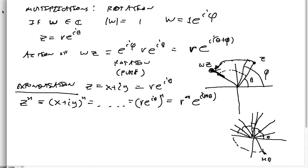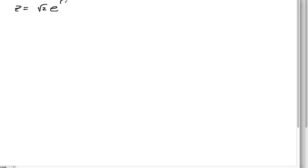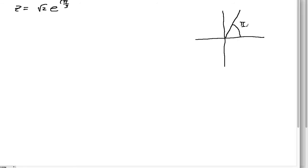Let's do some examples. Example 1: let z equal √2·e^{iπ/3}. Drawing this in the complex plane, π/3 is a bit bigger than π/4, so it's about there, and the magnitude is √2. Now I want to take the sixth power: z^6 equals (√2)^6 times e^{i(π/3)·6}, which gives 8 times e^{i·2π}.